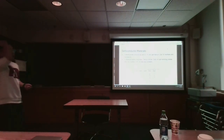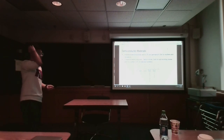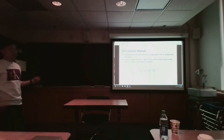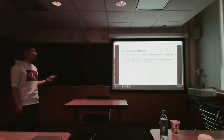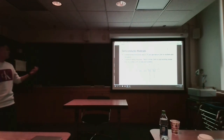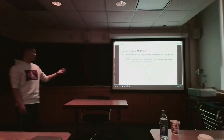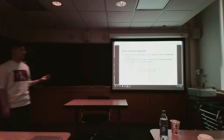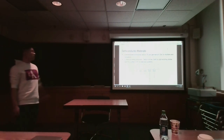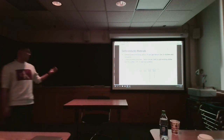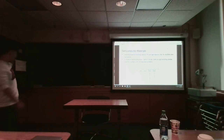There are many semiconductor materials. Some are called elemental semiconductors because they are made of single atoms, such as silicon and germanium. There are also compound semiconductors — for example, gallium nitride is mostly used for light-emitting diodes (LEDs), and zinc sulfide is used for computer or television screens.